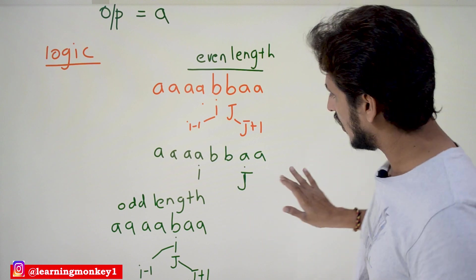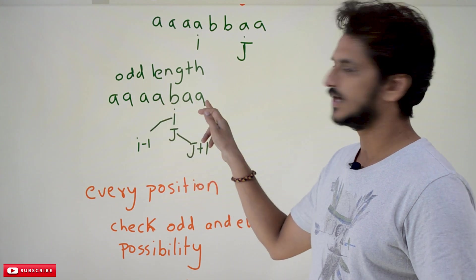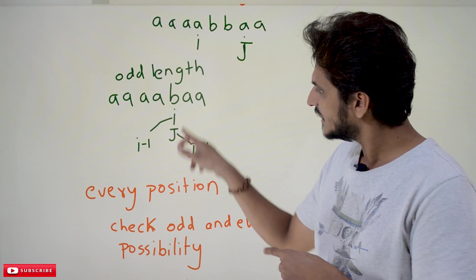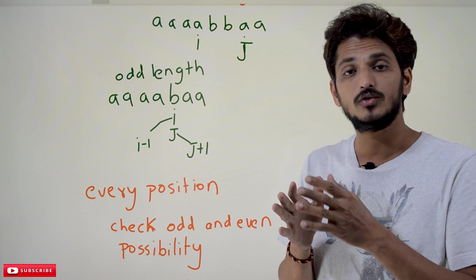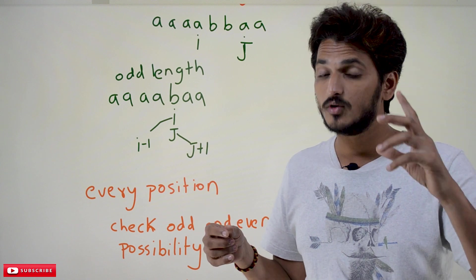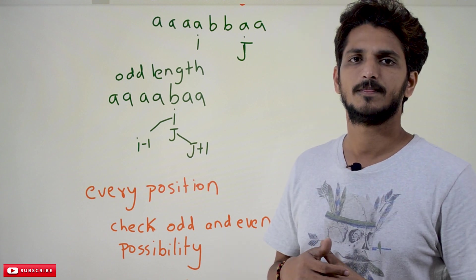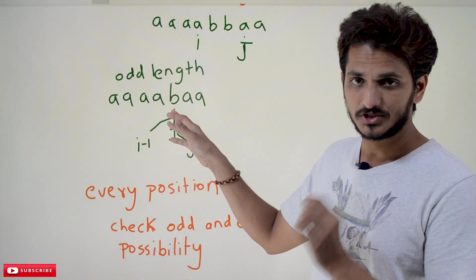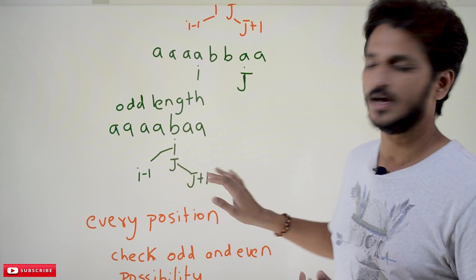Similarly, we have to identify odd length strings. For odd length, i and j start pointing to the same position. We then expand outward — decrement i and increment j — checking both sides. The only difference from even length is that i and j initially point to the same position for odd length, whereas for even length they start at adjacent positions.